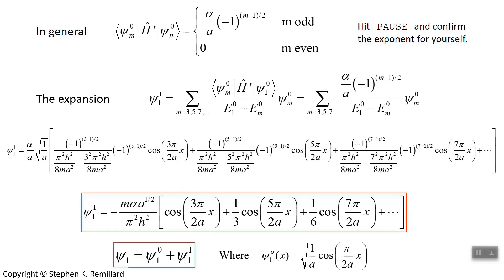The next consideration is what happens if there are degeneracies present, because then you risk having a singularity when the denominator goes to 0. So we have a different approach to take for the expansion in cases where degeneracies are present, and that's what's next.